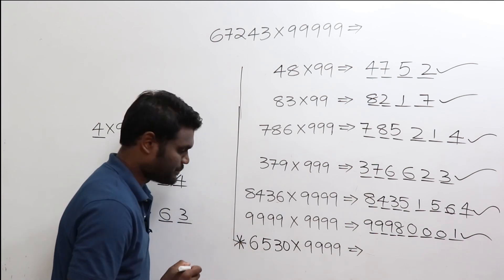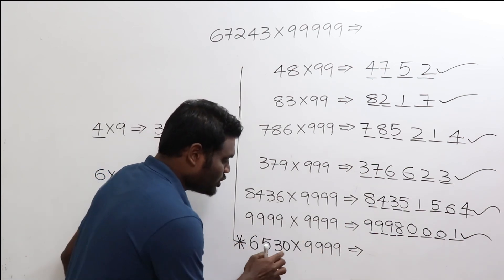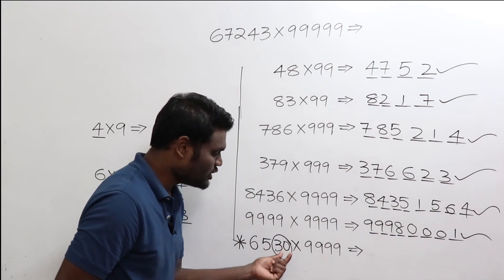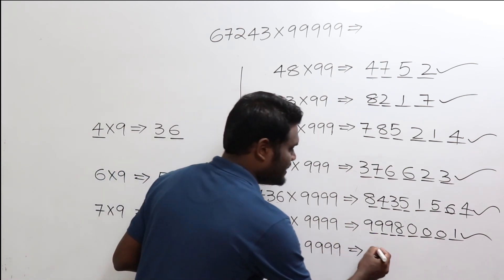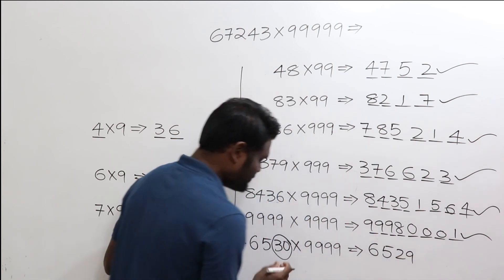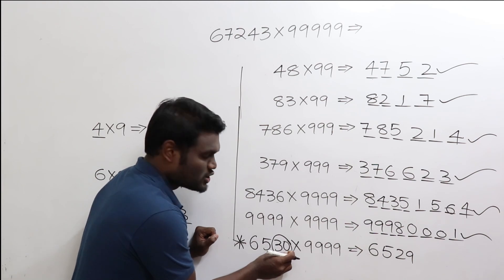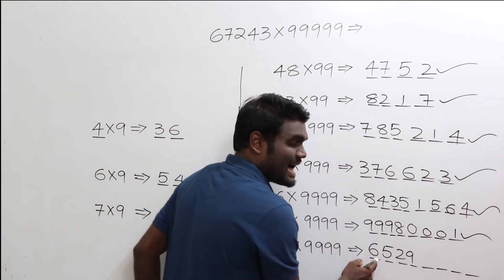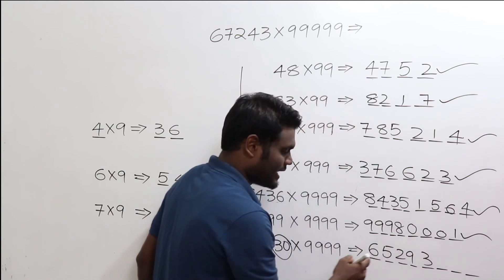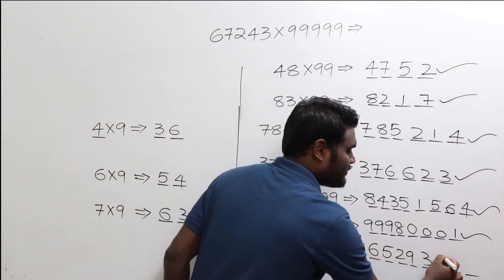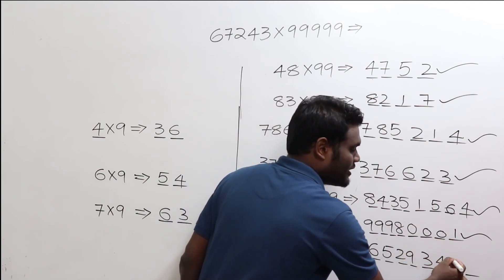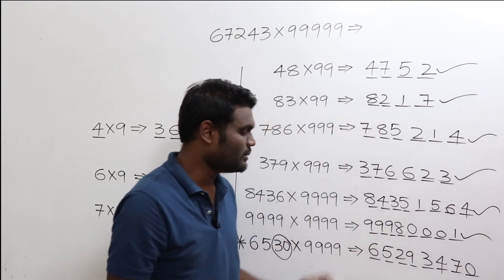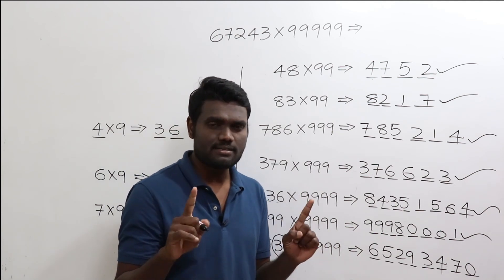Now an important case: 6530 times 9999. Since the last digit is 0, you can't subtract 1 from 0, so you reduce from 30. 30 minus 1 is 29, which means the number becomes 6529. As you have four digits, you need four more digits. For 6, add 3. For 5, add 4. For 2, add 7. For 9, add 0. So the answer is 65293470.